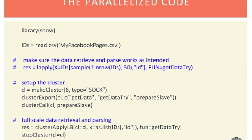Now if we want to actually run the code, we simply read in the page IDs. We can use the lapply function to test out the get data try function to make sure it works right. makeCluster will launch a new cluster of size 8. We can export the get data, get data try, and other functions, and then we can call the prepare slave functions. Finally, we can use the load balance cluster apply to process each of the IDs in the list with the get data try functionality. Eventually, stopCluster will close out the cluster.